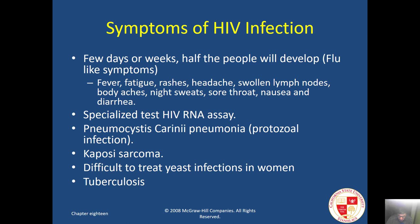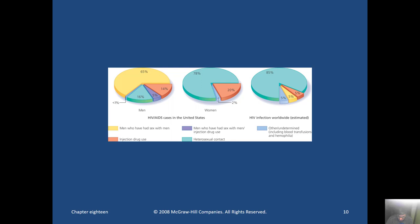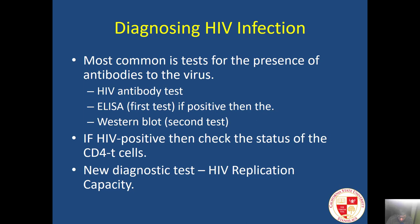Difficult-to-treat yeast infections in women can occur, and in some cases tuberculosis can develop as an opportunistic infection. This pie chart shows the wide range of populations susceptible to HIV infection, with various differences between the United States and worldwide. HIV can be detected through various means, and free HIV testing is available at our county health clinic and Stanislaus State Health Center.